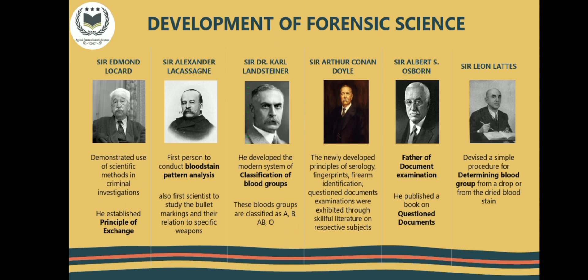Sir Alexander was the first person to conduct bloodstain analysis and to study bullet markings. Dr. Karl Landsteiner, the father of blood typing, discovered that blood can be grouped into different categories — that is, A, B, AB, or O.